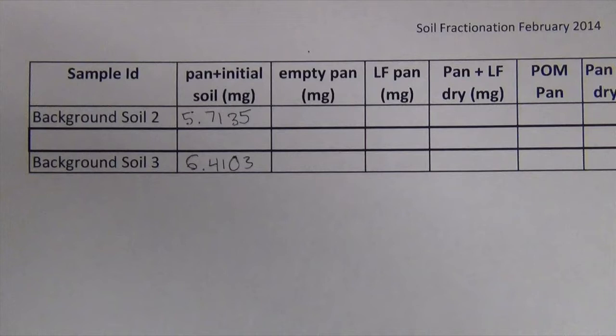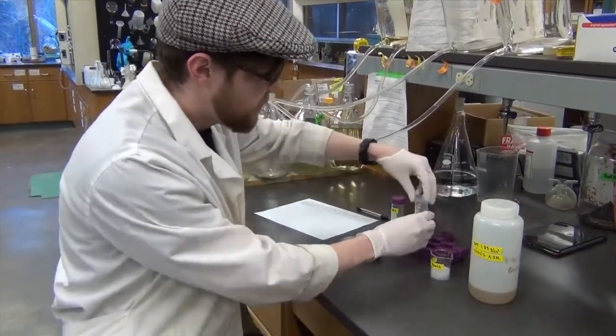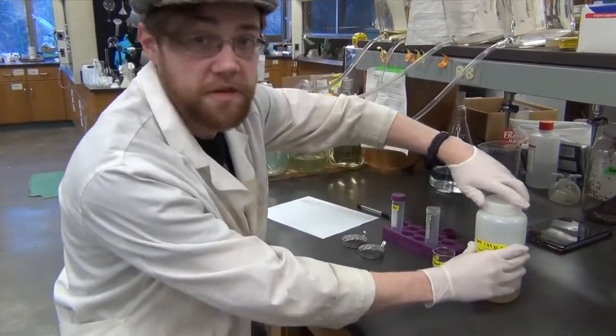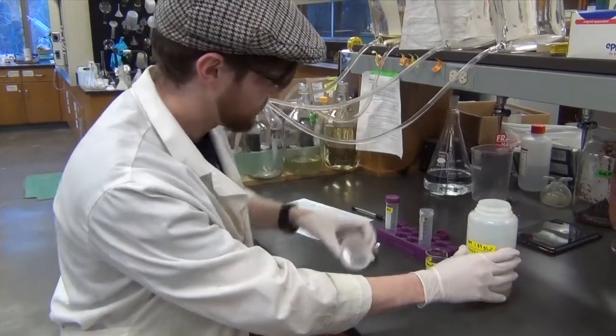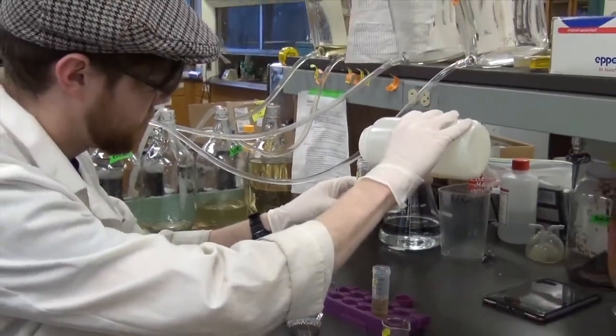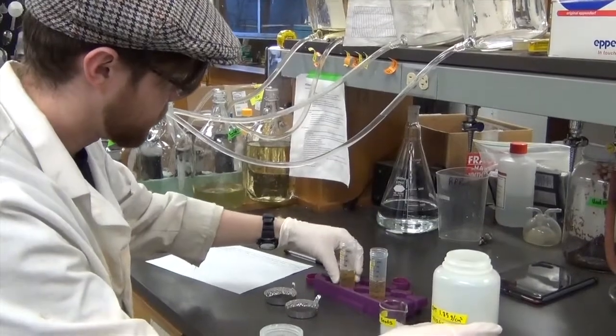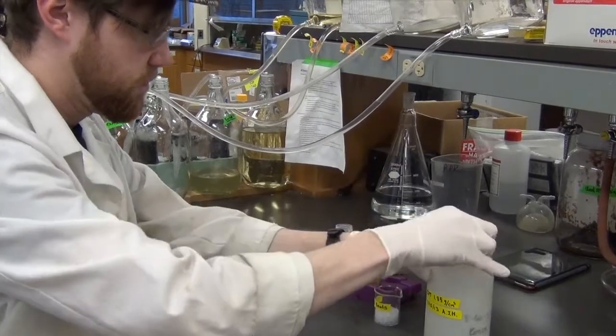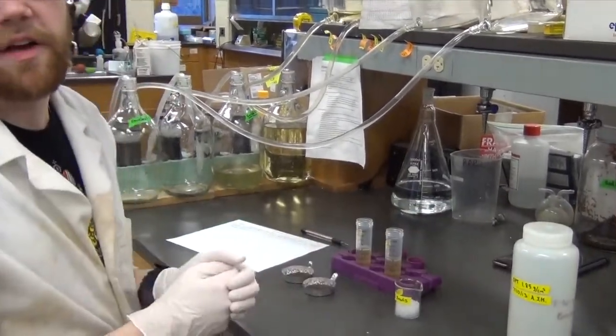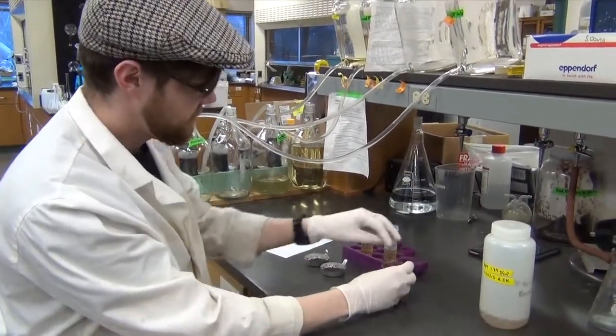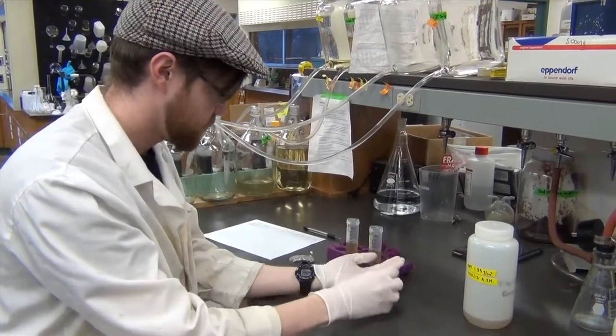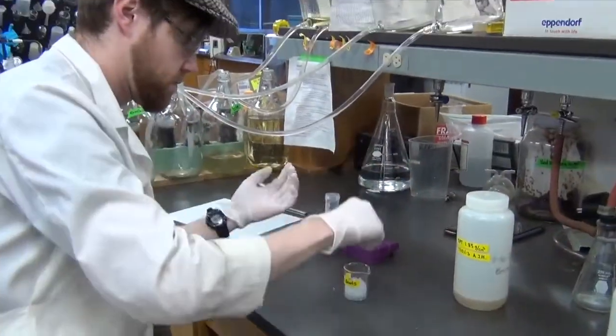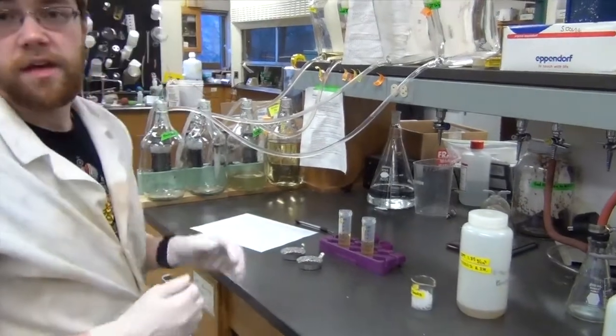So what I've done is I've recorded the weights of these tins plus the soil. This will be important later when we want to calculate how much we have of each fraction. What I'm going to do now is add 25 milliliters of sodium polytungstate, SPT, to each of these vials. Next I'll add 12 glass beads to each. And finally I'll add the soil.